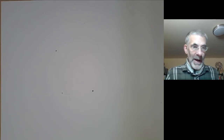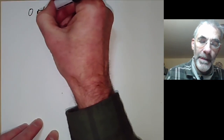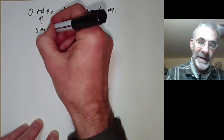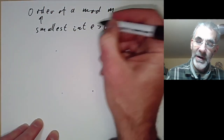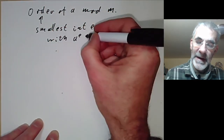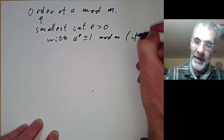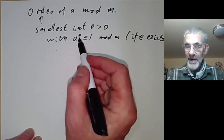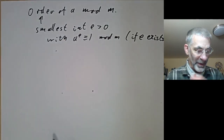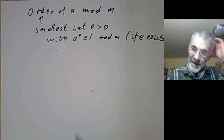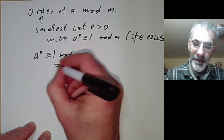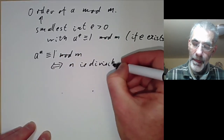Now we're going to look at some applications of Fermat's theorem, but to apply it we need the concept of the order of a modulo m. The order of a modulo m is the smallest integer e greater than zero such that a to the power e is congruent to 1 mod m — if such an e exists. There might not be any such e; for instance, if a is zero then no power of a will equal one.